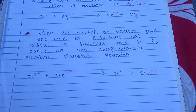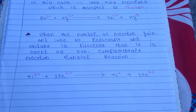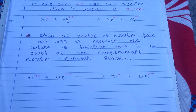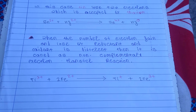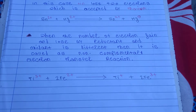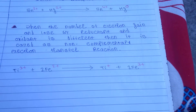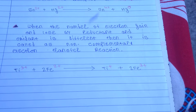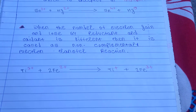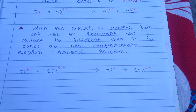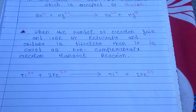In this reaction, Tl loses 2 electrons but Fe gains 1 electron each. The number of electrons gained and lost by the reductant and the oxidant is different, so it is called the non-complementary electron transfer reaction.